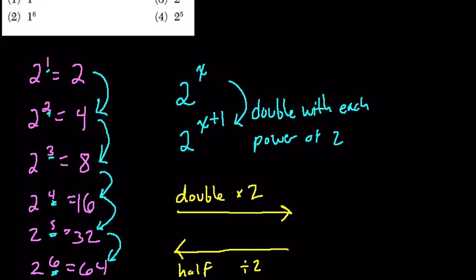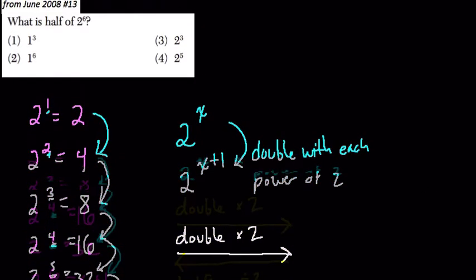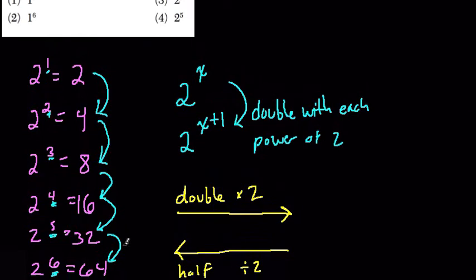Now, in this question, they're saying, what is 1 half of 2 to the 6th? Well, if you look at our pattern, every time we go back once or decrease our exponent by 1, our number is cut in half, right? All the way down here in this pattern until we reach 2.